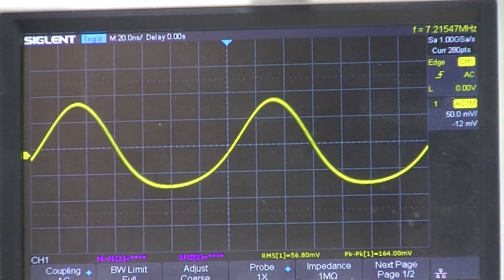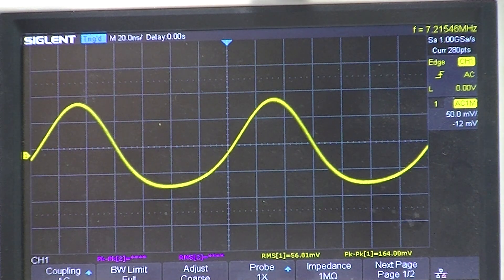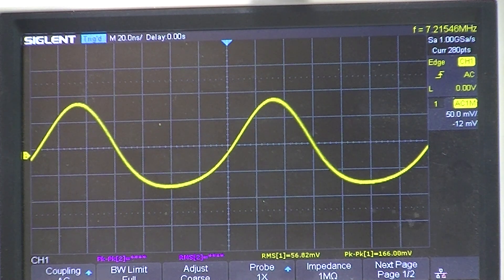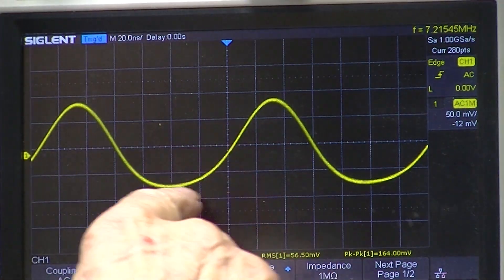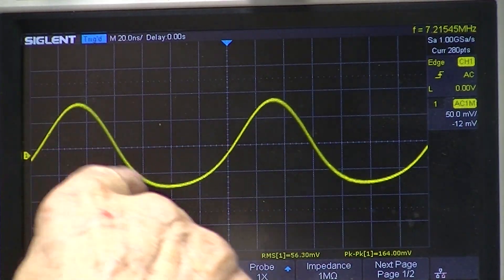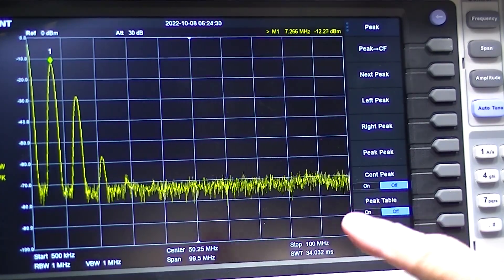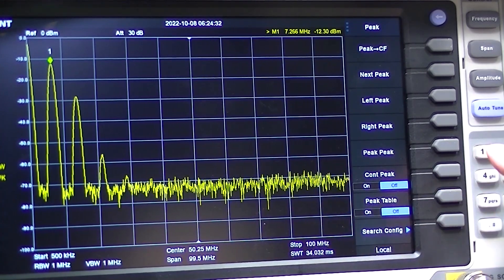The oscilloscope is a 1 meg input so that's no load at all. And you can see at 10 megahertz we have a slightly distorted sine wave, especially at the bottom, and at least two harmonics on the spectrum analyzer.